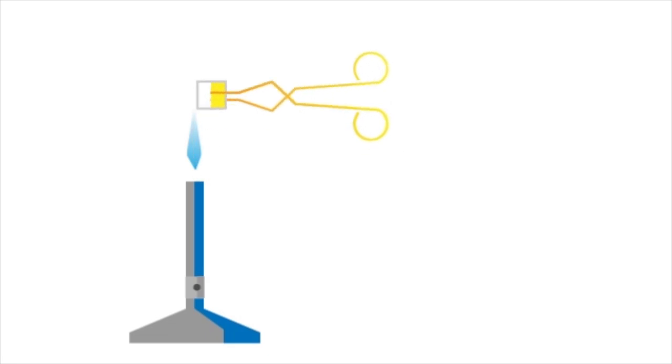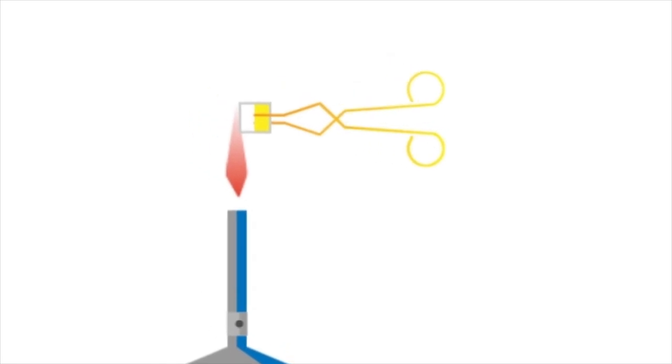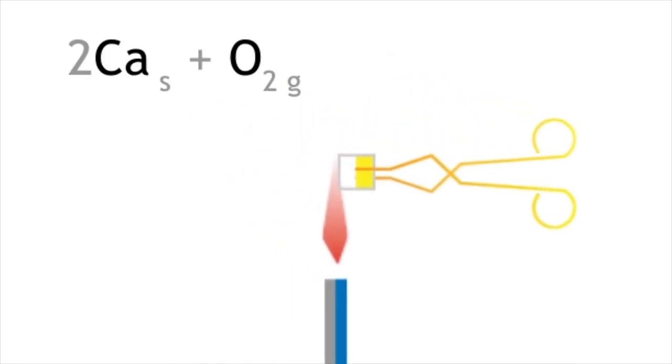Using tongs, place in a roaring Bunsen burner flame. You will observe that it burns with a red flame. Calcium reacts with oxygen to produce calcium oxide which is a white solid.